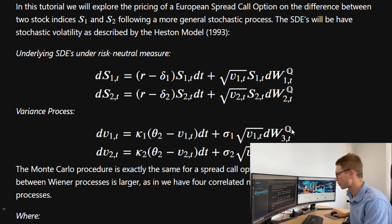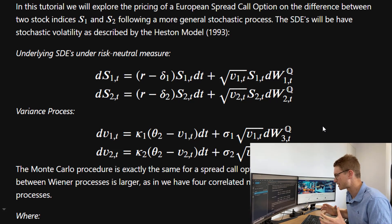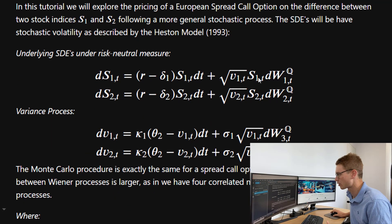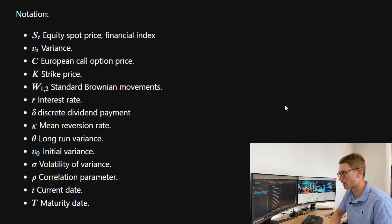You'll notice we have four different Wiener processes that we're modeling at the same time. The Monte Carlo procedure is the same as for a normal spread call option — which we've done a video on before for the Nasdaq and S&P 500 — except here we have a more complicated correlation matrix between these Wiener processes. We have to simulate all four simultaneously using a special correlation matrix which describes the relationship between each one of these Wiener processes, including the relationship between the Nasdaq and the S&P 500 variance processes.